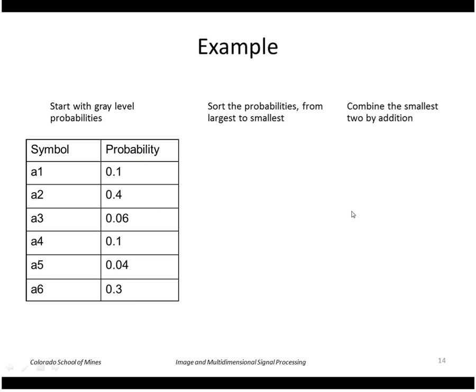So first thing we'll do is sort the probabilities from smallest to largest. So we have largest to smallest. The largest probability is A2 with a probability of 0.4. Next we've got A6 with 0.3. A1 is 0.1. A4 is 0.1. A3 is 0.06 and A5 is 0.04.